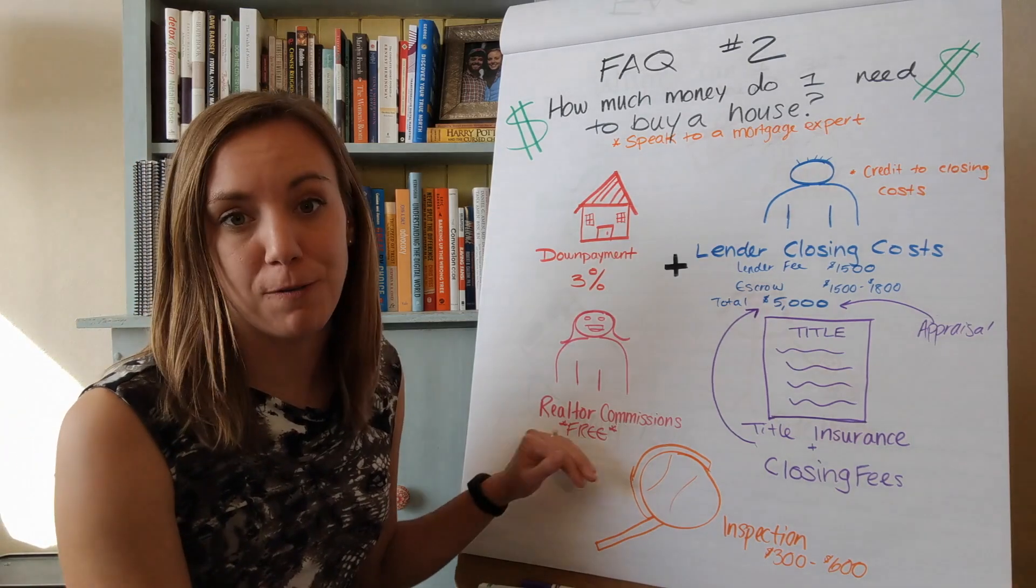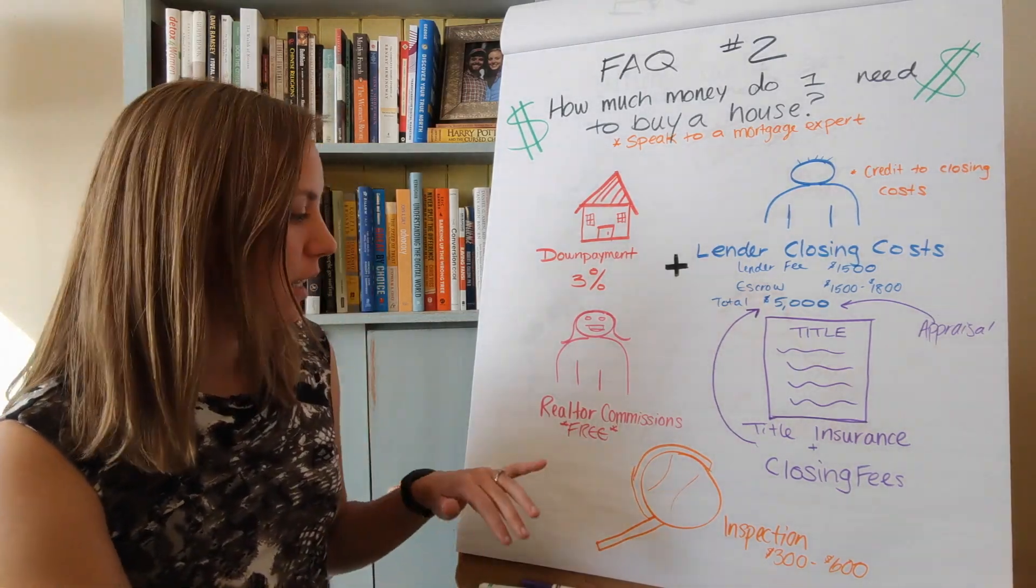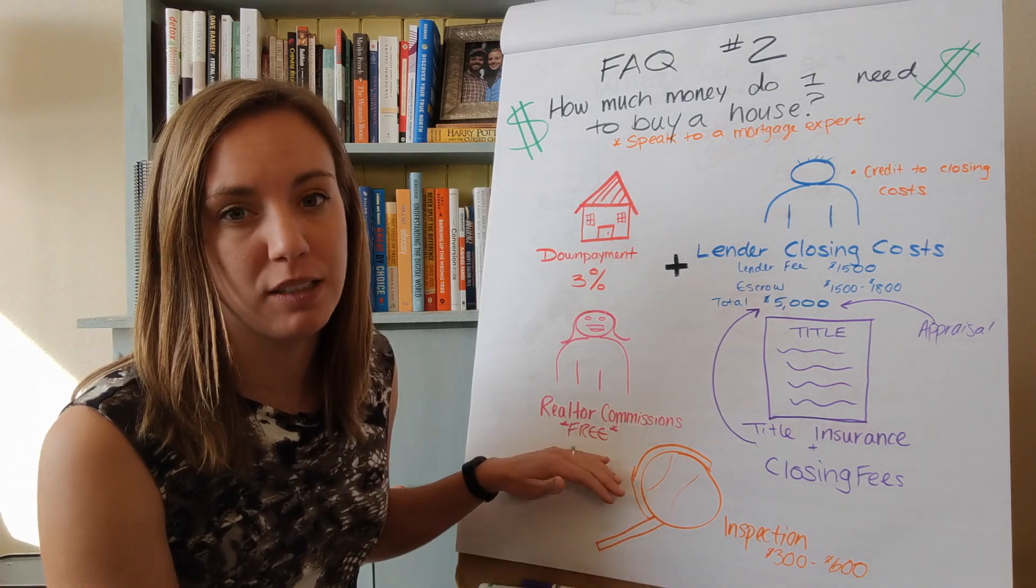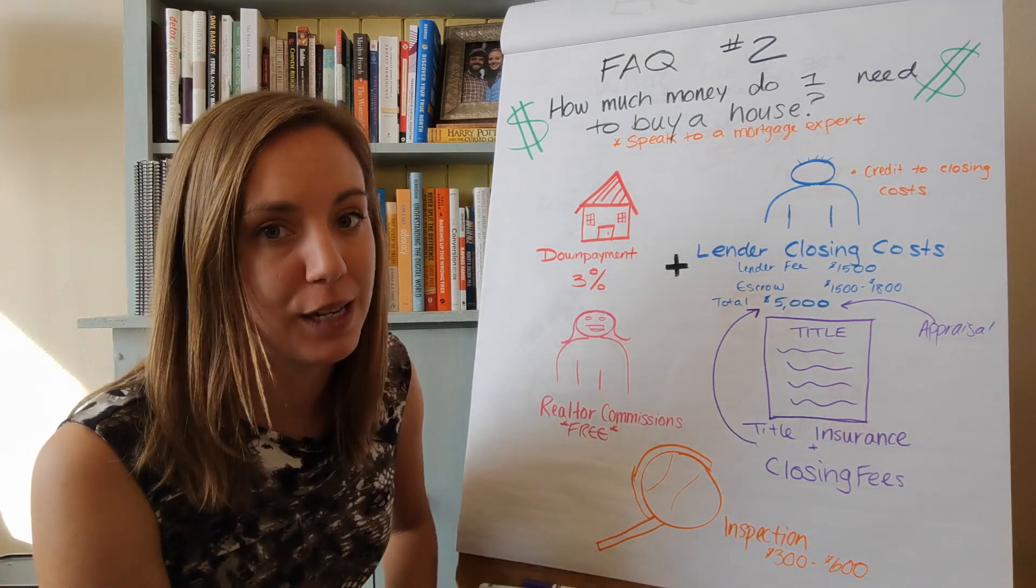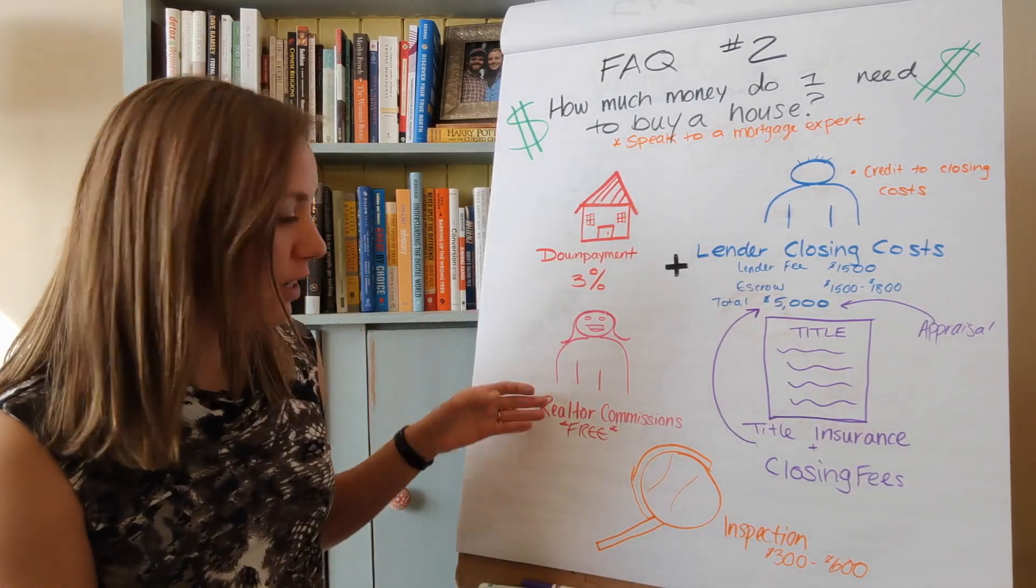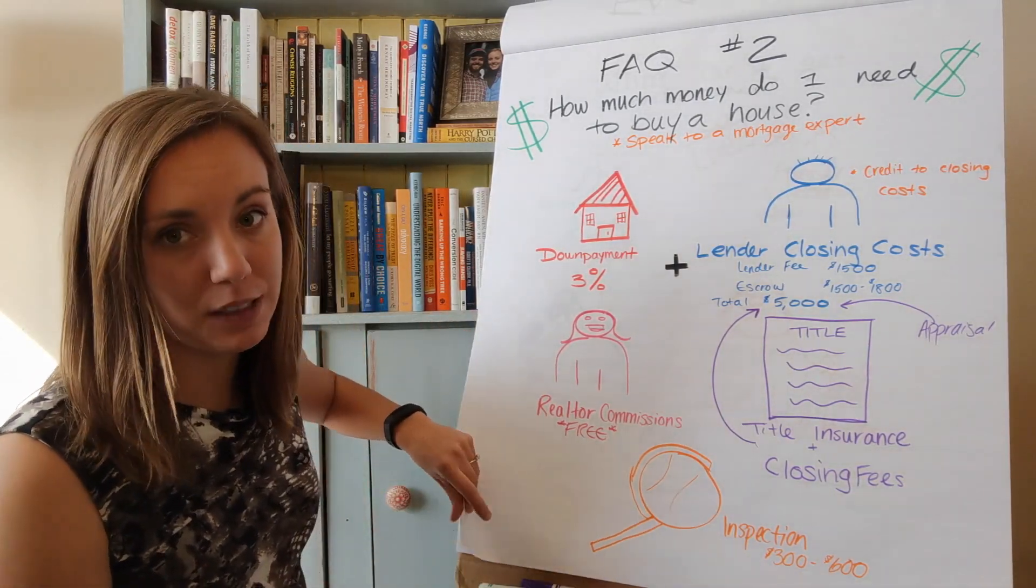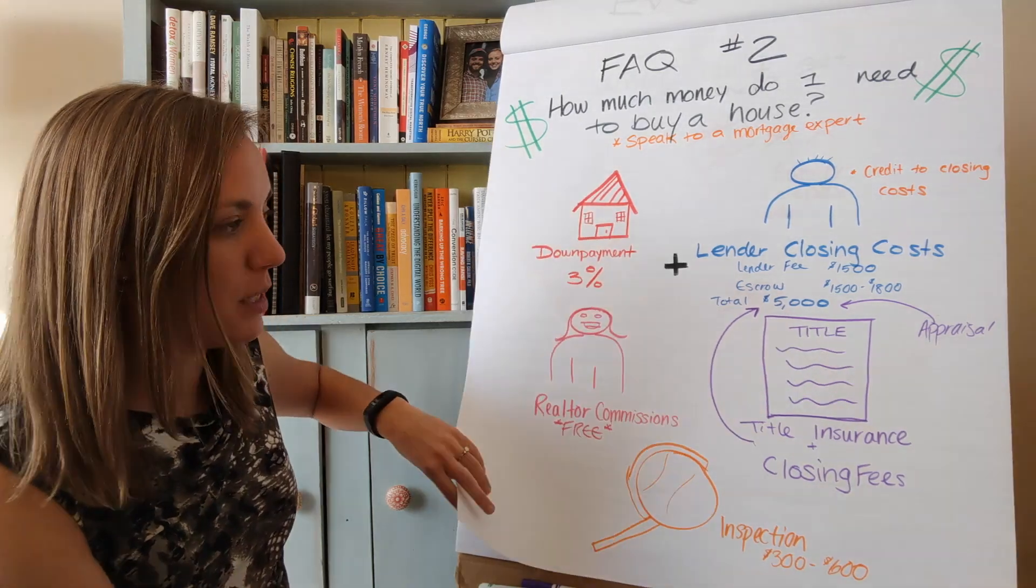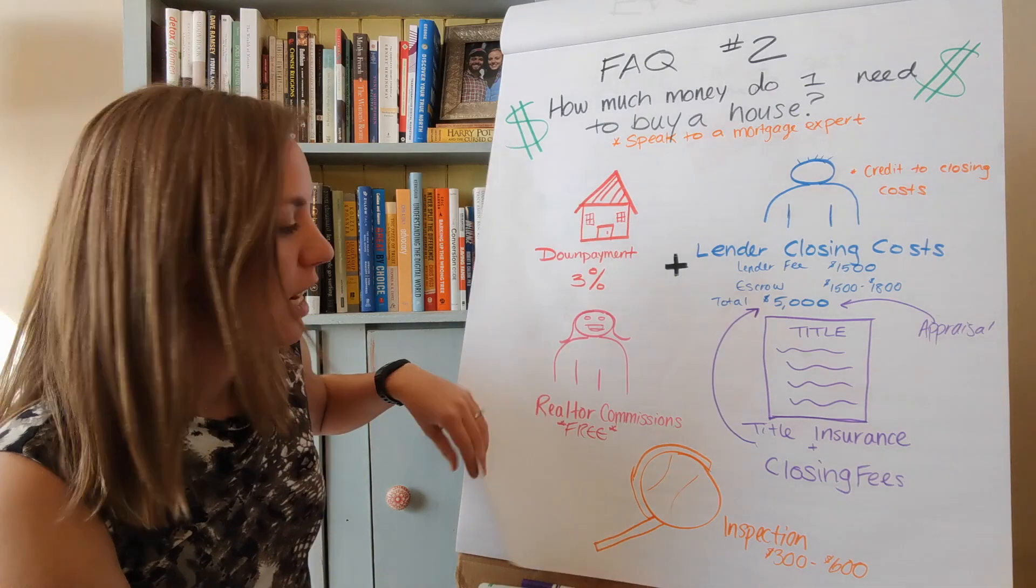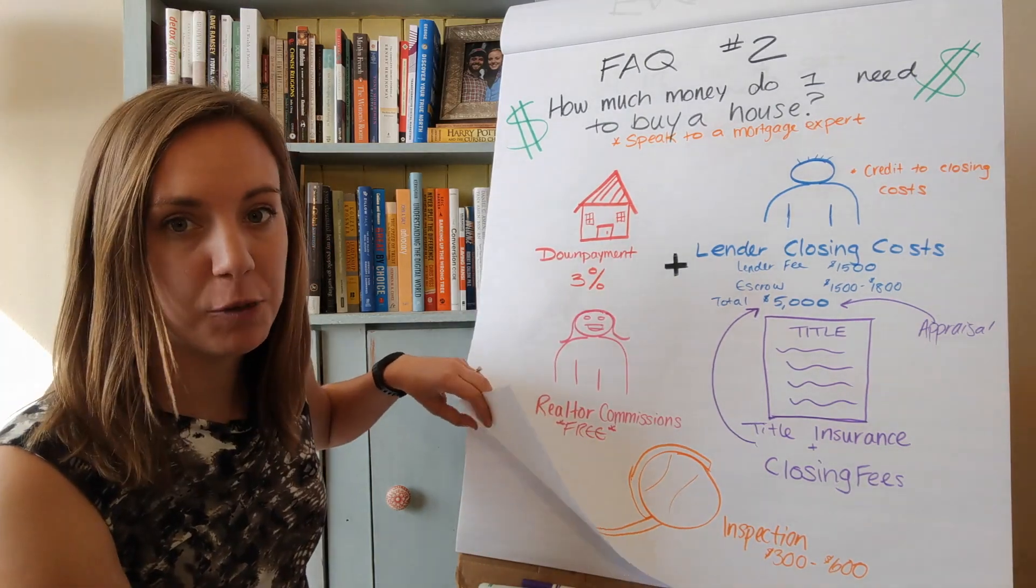Lastly, realtor commissions are free for the buyer. Buyers' agents are paid for by the seller, so the seller pays both their own agent and the buyer's agent. The great thing is if you're looking to buy a home, you don't have to calculate that into the equation because it's a free service already negotiated between the seller and seller's agent.